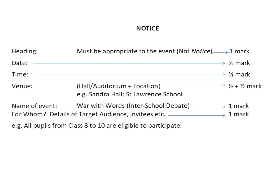Then, venue. Venue carries one mark — half for the hall or the auditorium wherever the event is happening, and the second half is for the location of that hall. So, half and half — one mark for venue. Now, the name of the event. For example, 'War with Words,' which is an inter-school debate. You have to write the name of the event; this carries one mark. Another one mark is for telling for whom the notice is — details of the target audience, invitees, etc. For example, all pupils from class 8 to 10 are eligible to participate.